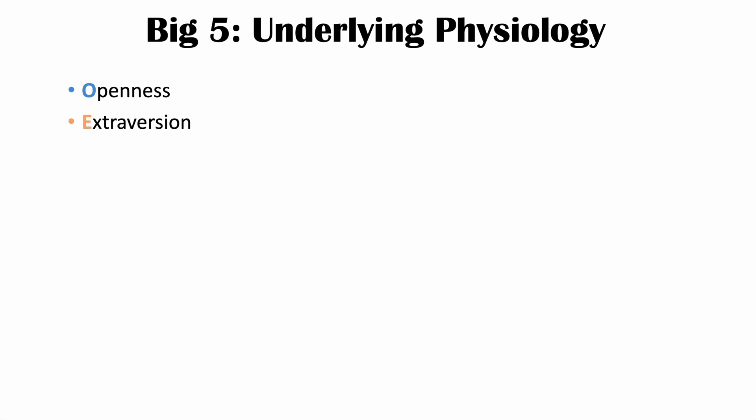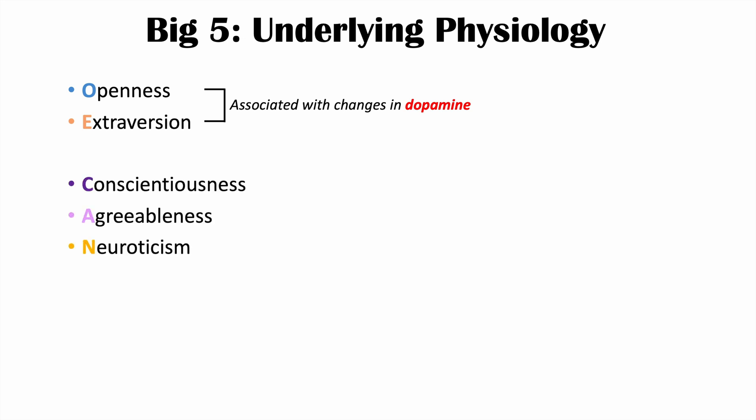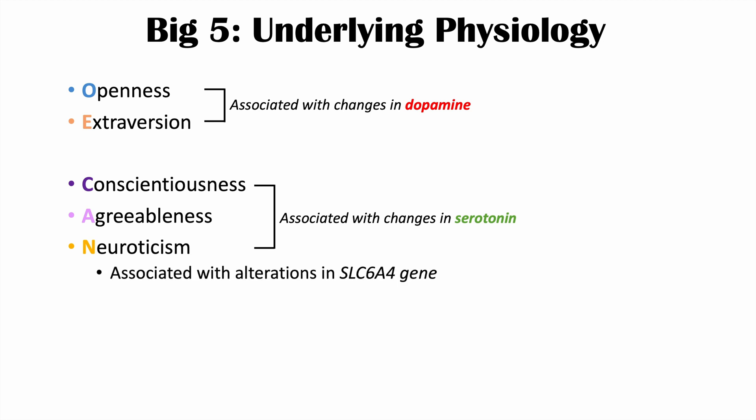Before we get into each factor, let's briefly talk about the underlying physiology of these traits. Openness and extroversion are more associated with changes in dopamine. Conscientiousness, agreeableness, and neuroticism are more likely associated with changes in serotonin. It's also important to note that neuroticism is associated with alterations in the SLC6A4 gene.